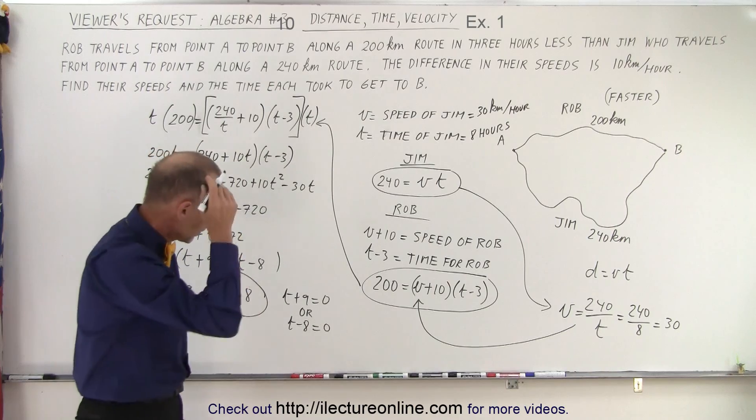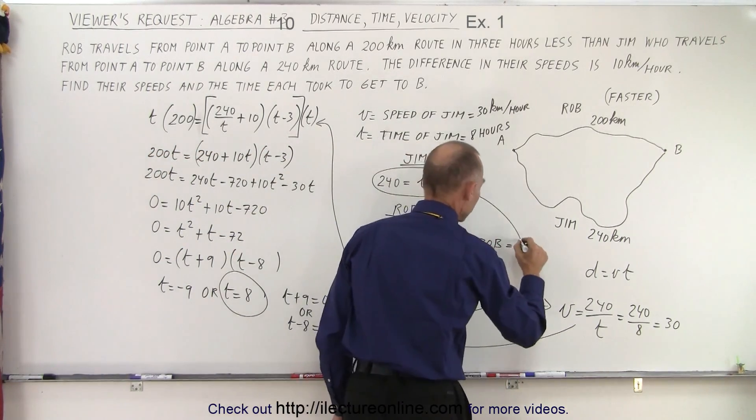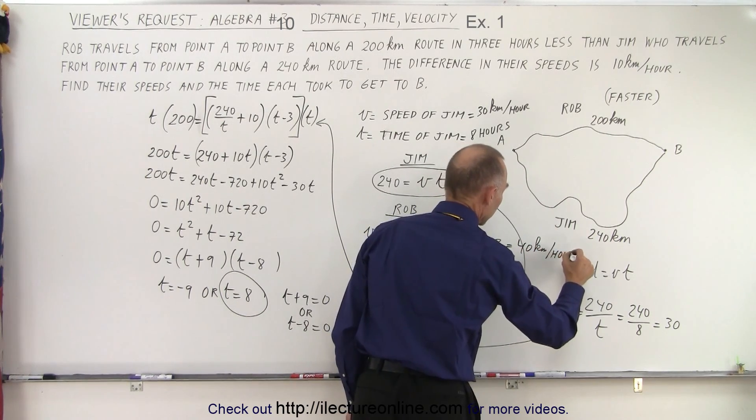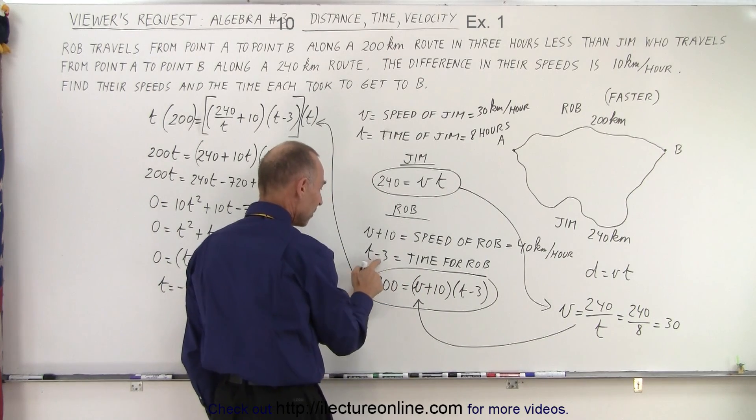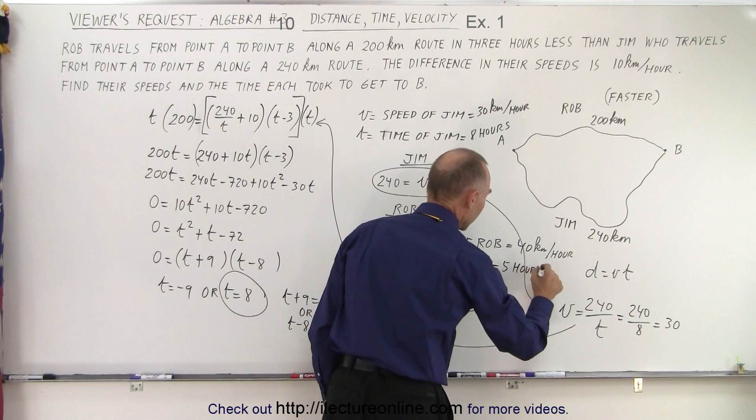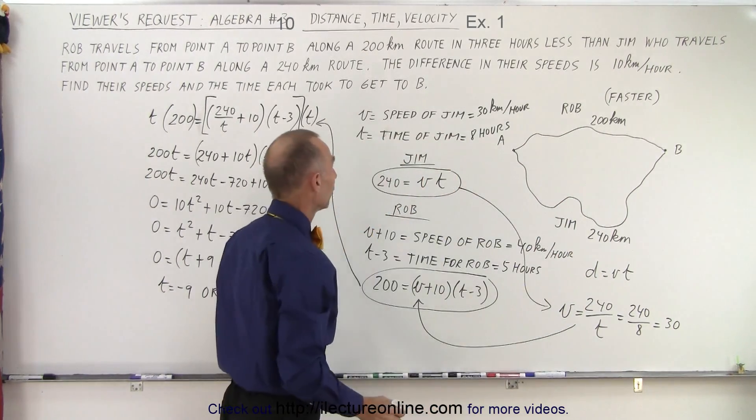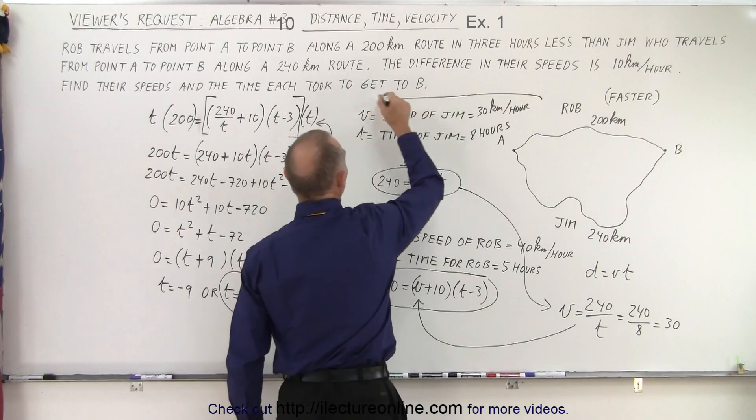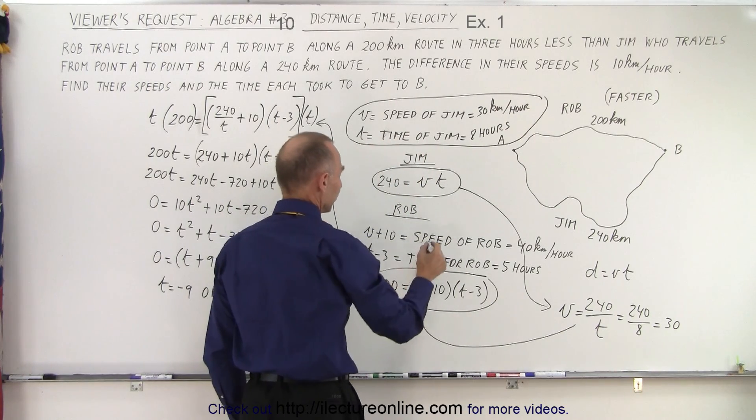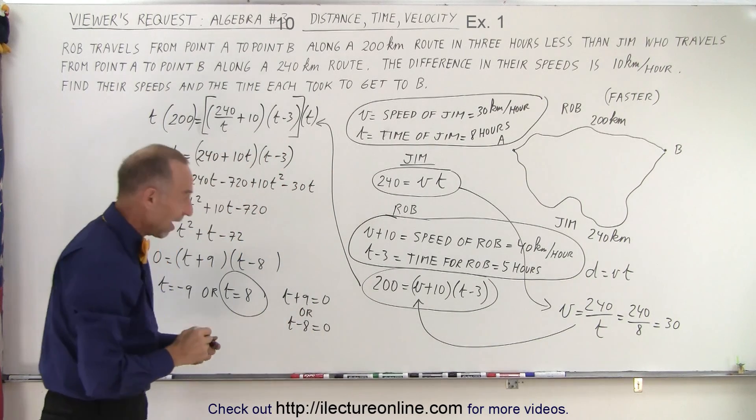What about Rob? Well, V plus 10 is the speed of Rob so 30 plus 10 equals 40 kilometers per hour. And the time for Rob would be eight minus three or five hours. And five times 40 is indeed 200 kilometers for the shorter route. So the speed and time of Jim is 30 kilometers per hour and eight hours. And for Rob the speed is 40 kilometers per hour and the time is five hours.